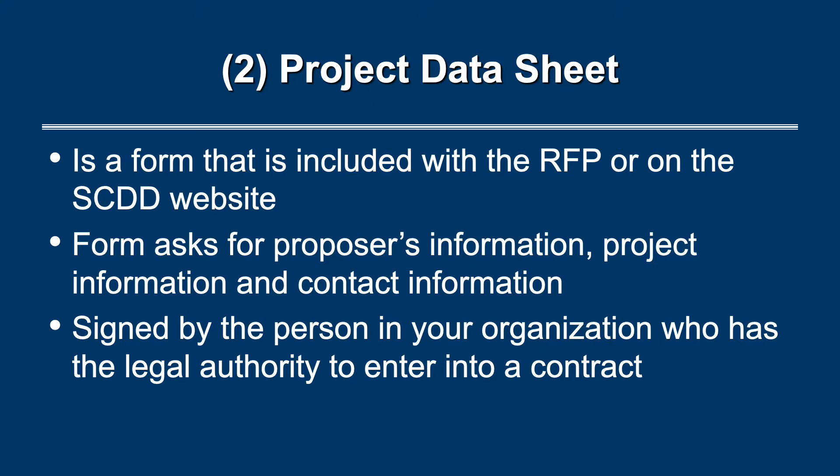The second form is the project data sheet. It is a form included with the RFP or on the SCDD website. The form asks for your information, project information, and contact information. This sheet must be signed by the person in your organization who has the legal authority to enter into a contract.